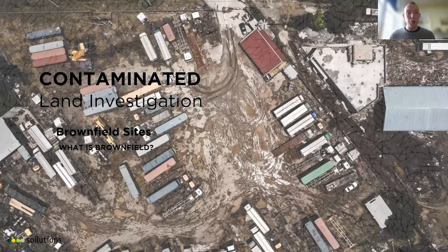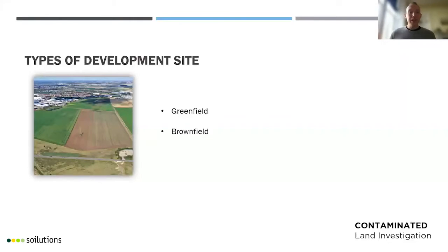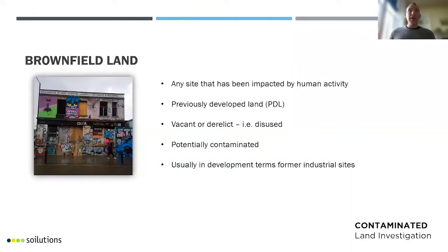In terms of brownfield land, it may seem obvious what it is, but there are a few nuances to discuss. The main two types of development site are greenfield and brownfield — greenfield is undeveloped, brownfield has been developed before. In planning law, brownfield refers to sites that are vacant or derelict, so out of use. This image here is a pub in London that closed in the 1990s and was going to be redeveloped — a perfect example of a brownfield site.